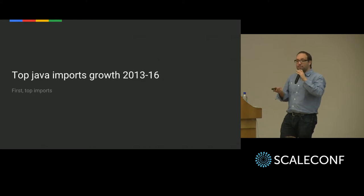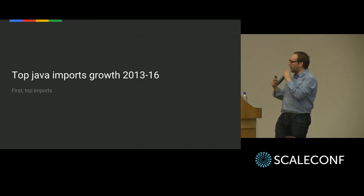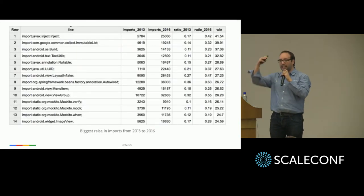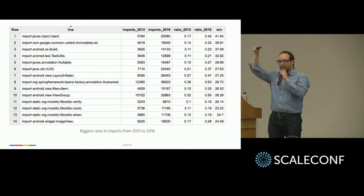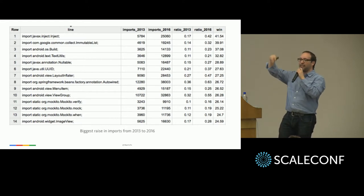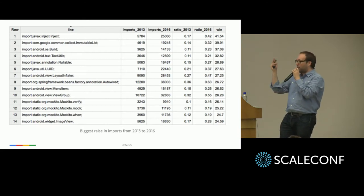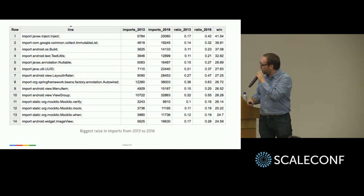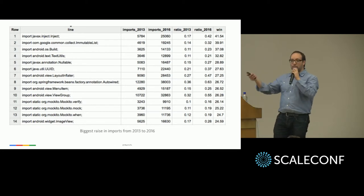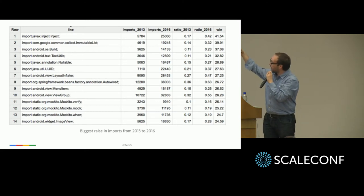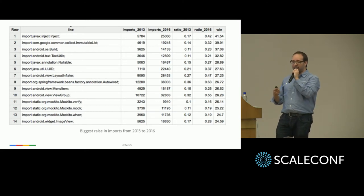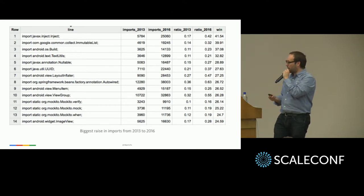For example, Java: if I split each file line by line, look at the ones that start with 'import,' and count them across 2013 and 2016, these are the imports that have grown the most. One of these projects is Mockito — people are testing more with Mockito. Inject is also one of the imports with the most growth. You can go and start digging deeper in different languages.